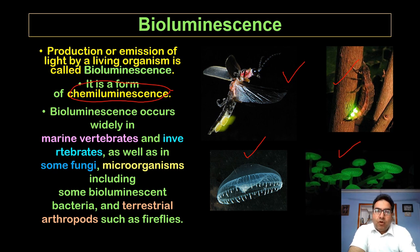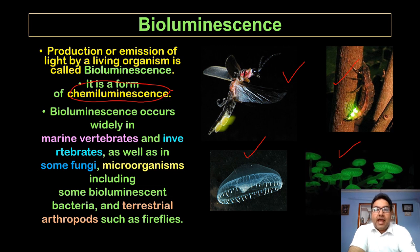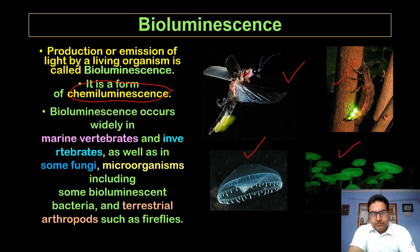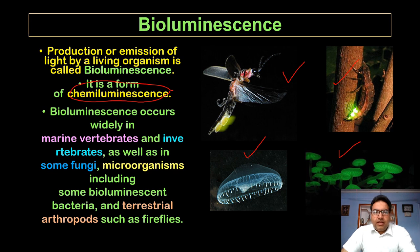In some animals and fishes the light is bacteriogenic — that is, light produced with the help of bacteria present on the skin or some part of the animal. We call such light production bacteriogenic light, and it is produced by symbiotic bacteria such as those from genus Vibrio. In others, it can be autogenic, that is self-produced by the animals themselves.